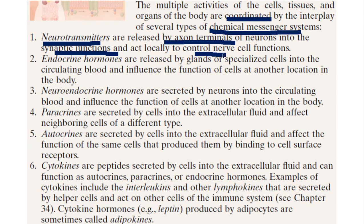These chemical messengers are never taken from outside the body. They cause chemical reactions or changes inside and outside the cell. Some of these messengers are neurotransmitters, released from the axon terminals of neurons into the synaptic junctions, used for the control of nerve cell functions. Then you have the endocrine hormones, produced by the endocrine glands and released into the circulating blood, where they bind with the target cell and cause many changes inside the cell.